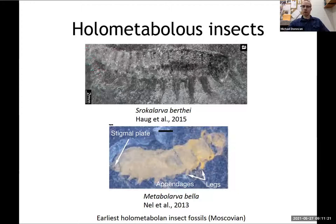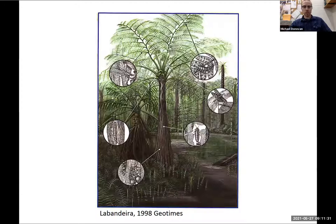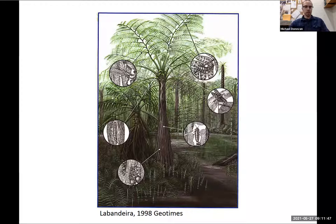There were holometabolous insects at this point. Here are some examples of holometabolous larvae from the Moscovian — these were starting to diversify during this time. Here's a reconstruction of a Psaronius showing all the different types of herbivory and detritivory that were happening on the plant. By using the coal ball and combining it with compression floras, we can get a pretty good idea of the variety of damage found on these plants.